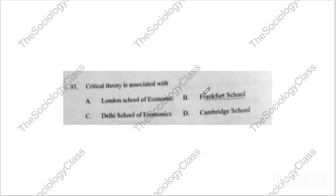Question number thirty-three: 'Critical theory is associated with...' London School of Economics, Frankfurt School, Delhi School of Economics, or Cambridge School? The correct answer is B — Frankfurt School. Question thirty-four: 'Marwaris are a classic example of...' The correct answer is C — business community. These are all repeated questions.